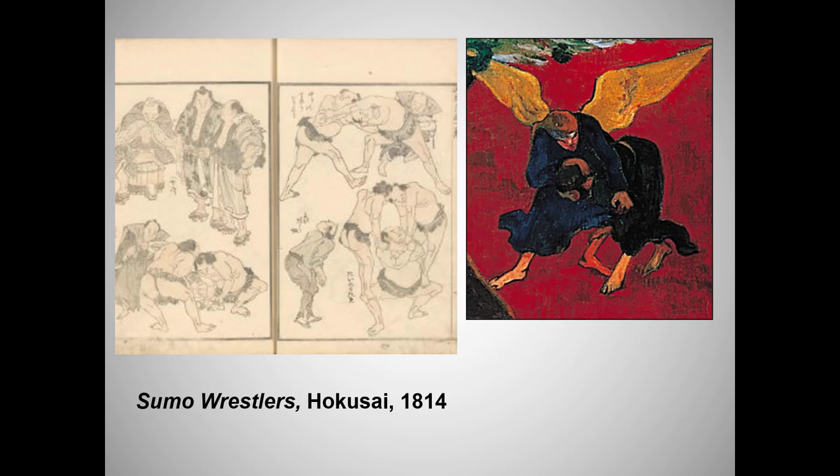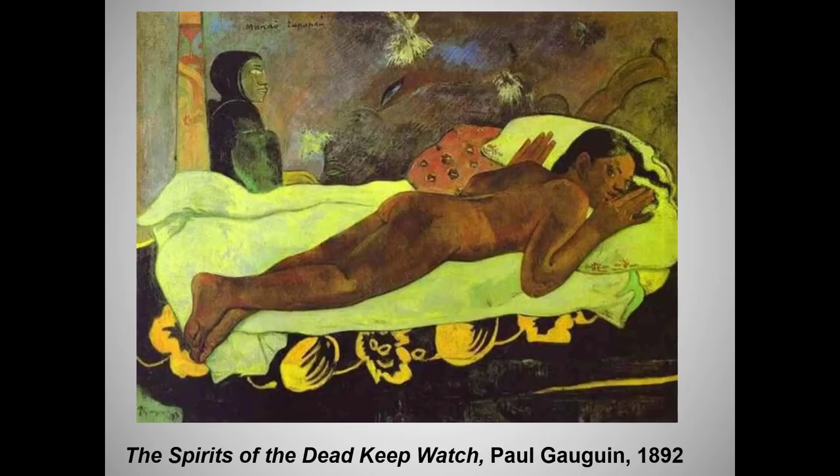Here, Gauguin is also reflecting the influence of Japanese woodblock prints. Note the similarity between Jacob and the Angel and a Hokusai print of sumo wrestlers. Gauguin painted in Brittany to escape what he saw as the corruption of city life.